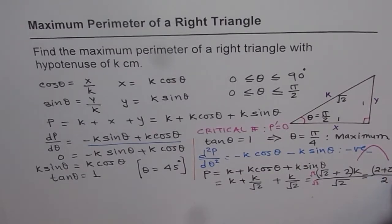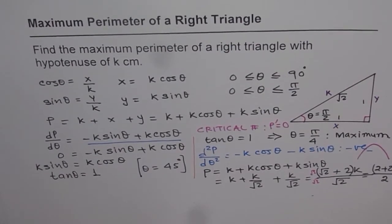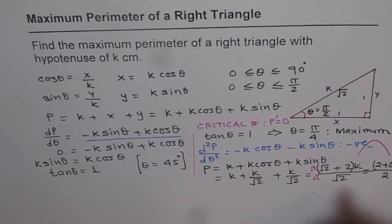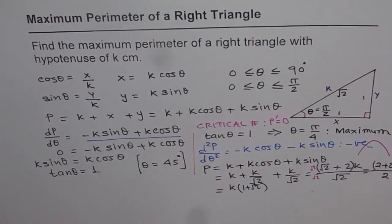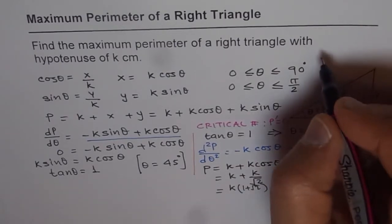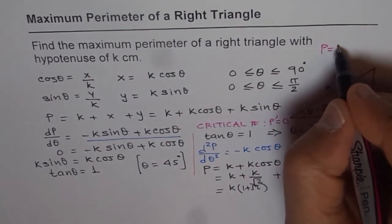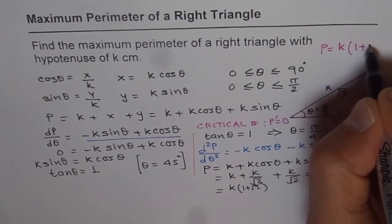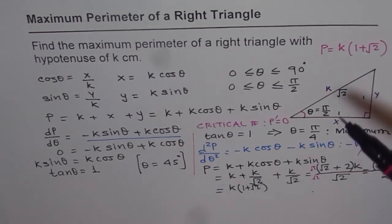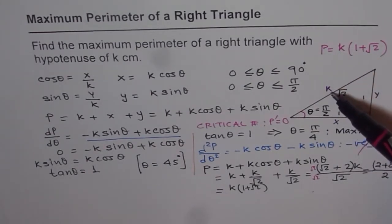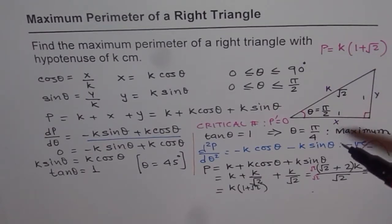Simplifying, 2 and 2 cancel, giving maximum perimeter = k·(1 + √2). So the maximum perimeter of a right triangle with hypotenuse k is k(1 + √2). For example, if k = 100, the maximum perimeter is 100(1 + √2).